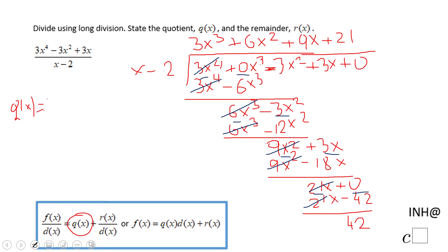3x to the third power, plus 6x², plus 9x, plus 21. That is q(x).